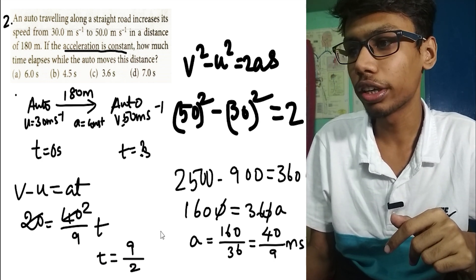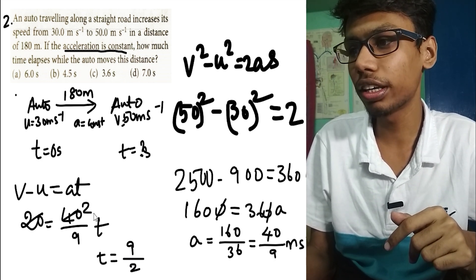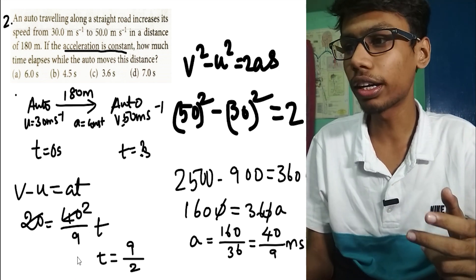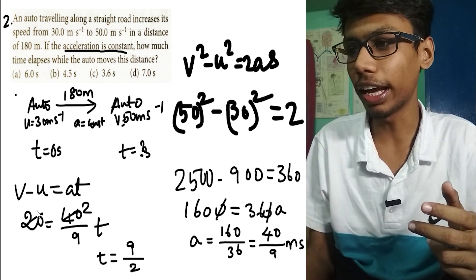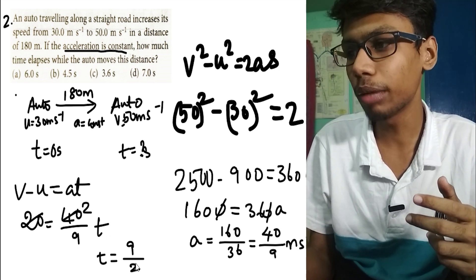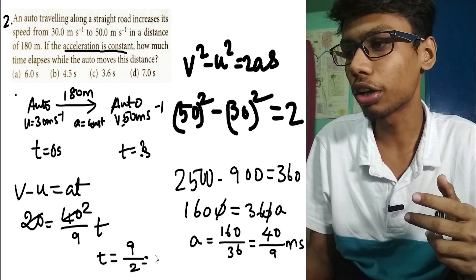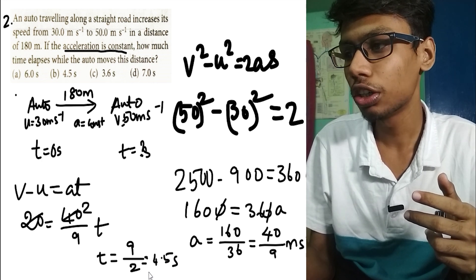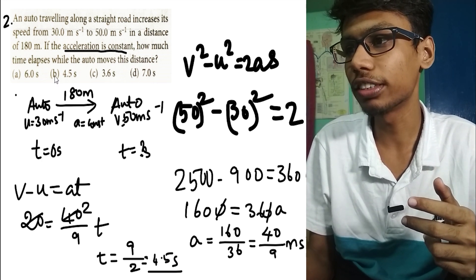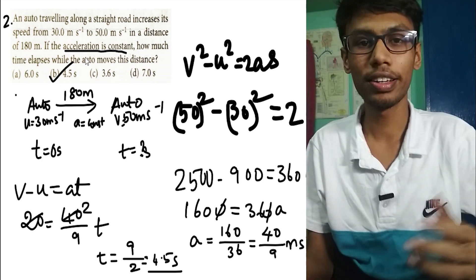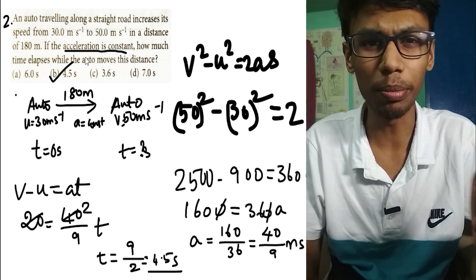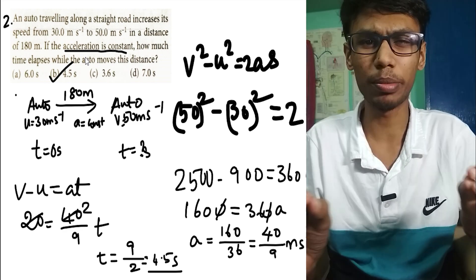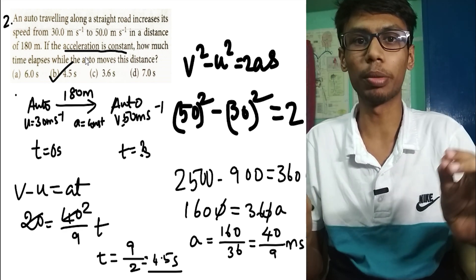So 9 divided by 2 equals 4.5 seconds. Therefore 4.5 seconds is the answer. This problem is quite straightforward.